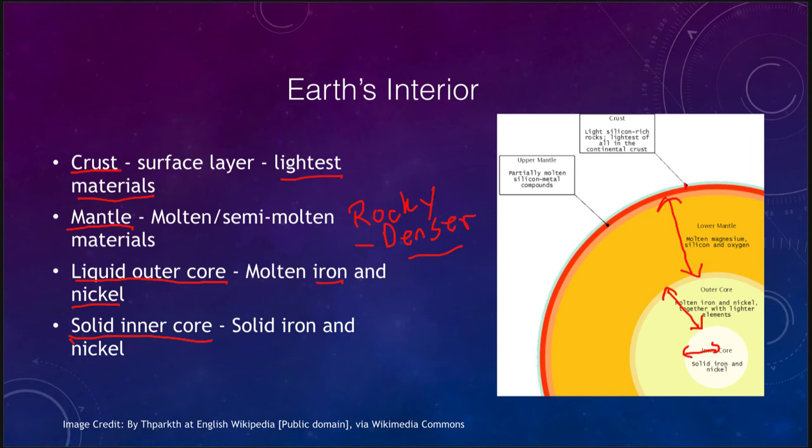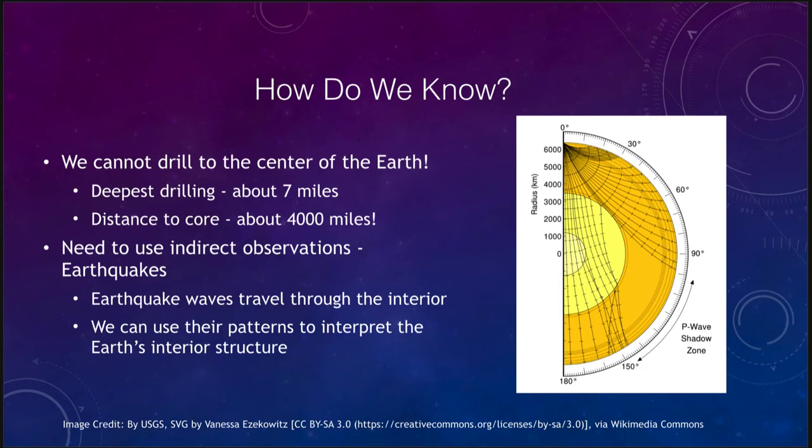Now the question is, how do we know all of this? So let's look a little bit at how we can determine that this is what the Earth's interior looks like. Because as I've said, we cannot drill to the center of the Earth. It is simply not possible. Our deepest drilling may be about seven miles down. The distance to the core is about 4,000 miles. So we've only drilled a tiny fraction of the way. We've barely gotten through the outer portions of the crust. So we have no way to get down to the core. So in order to learn about this, we need to use indirect observations to figure out what is going on down further in the Earth.